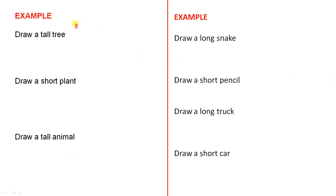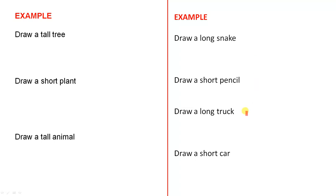Some examples: because students love drawing, they could draw a tall tree, a short plant, or a tall animal. These are just three examples and you can use many others. They could also draw a long snake, a short pencil, a long truck, or a short car.